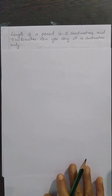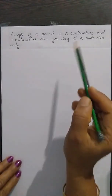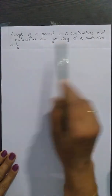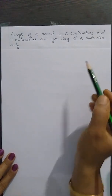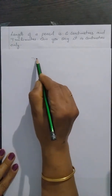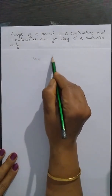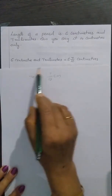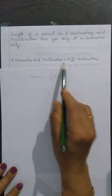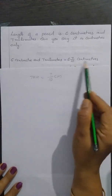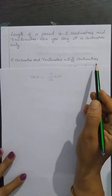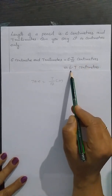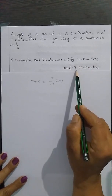Suppose the length of a pencil is 6 cm and 7 mm. Can you say it in centimeters only? We know that 7 mm is equal to 7/10 cm. So, 6 cm and 7 mm is equal to 6 and 7/10 cm. The decimal form of 6 7/10 cm is equal to 6.7 cm.